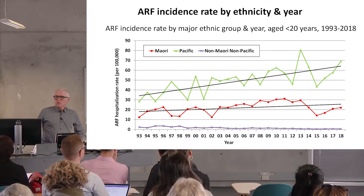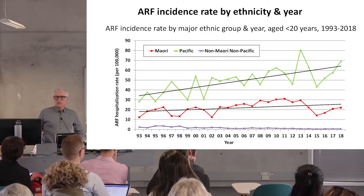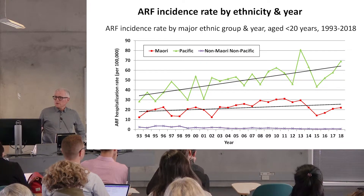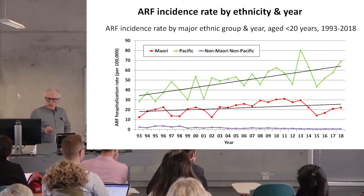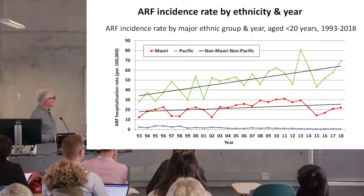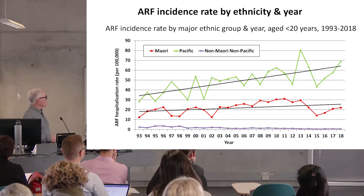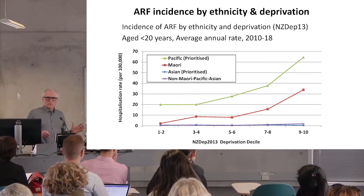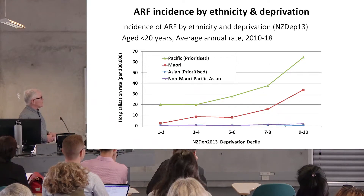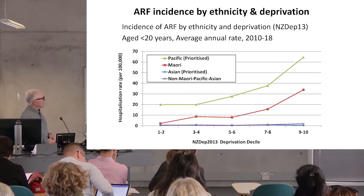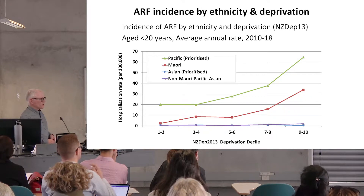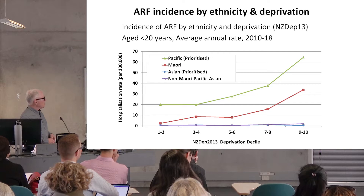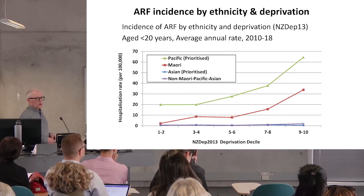There is a huge concern in New Zealand about the massive increase in inequities in this disease, looking at rates in those under 20 years of age. The disease is basically eliminated in European and Asian children. There's maybe a slight dip recently in Māori children and rates continuing to climb in Pacific children. Looking at average rates over the last 20 years in the under-20s, it is clearly a disease of poverty — the poorest 20% of neighbourhoods showing higher rates — and it's also very strongly patterned by ethnicity and all the things that go with that.